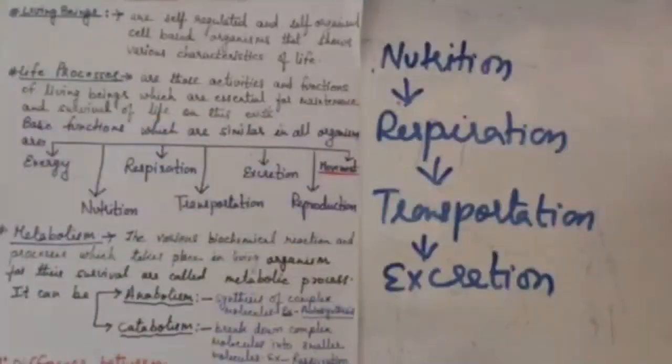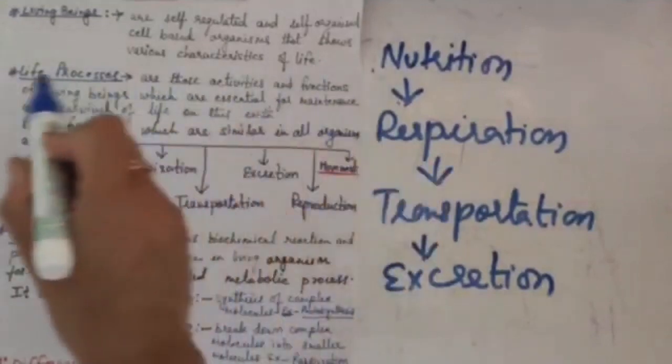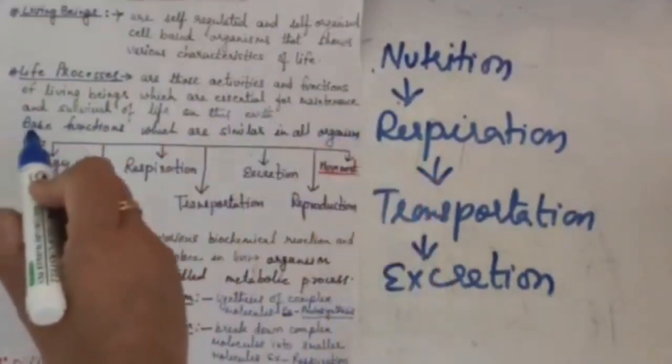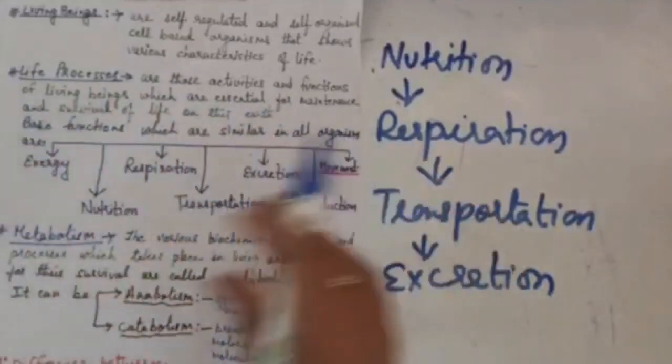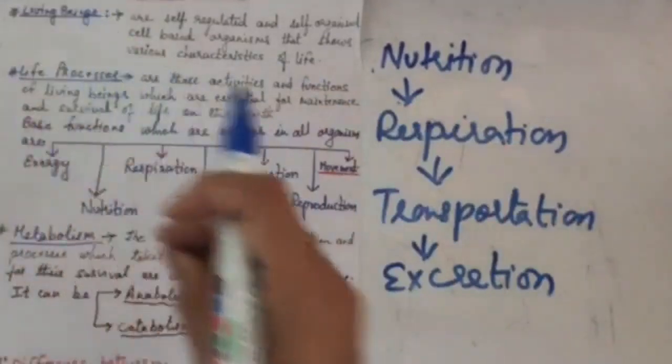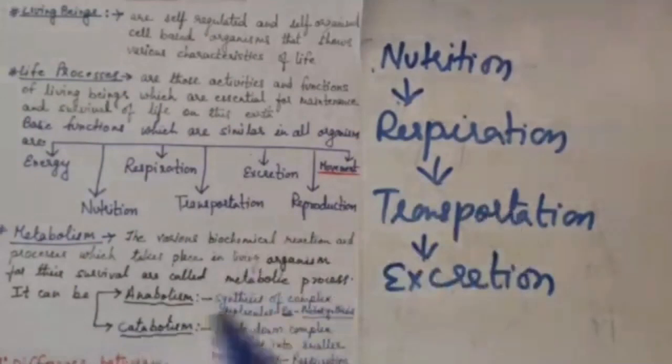Now next we will be dealing with the definition of life process. Life processes are those activities and functions of living beings which are essential for maintenance and survival of life on this earth. These are all the basic functions which are similar in all organisms. So we can say that life process occurs in both unicellular and multicellular life forms.